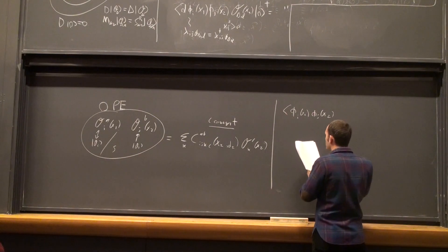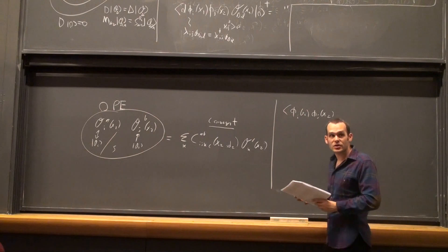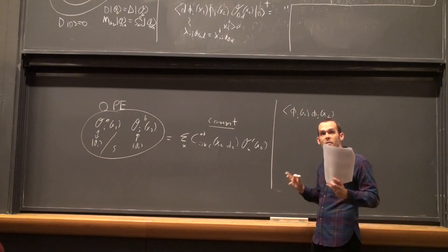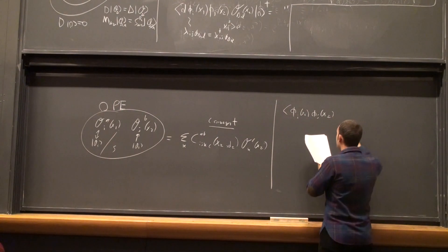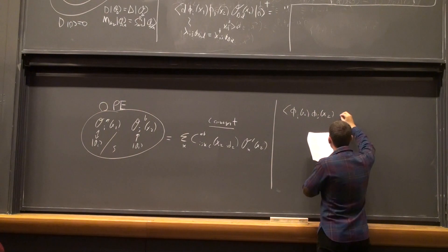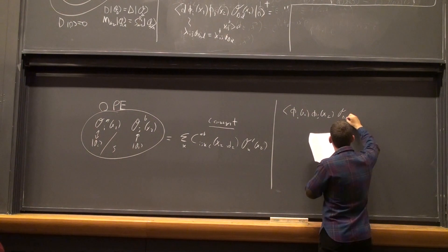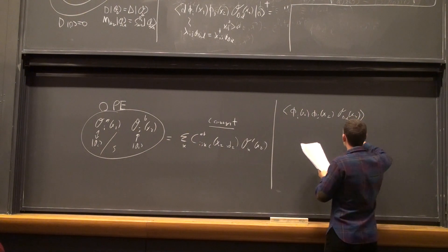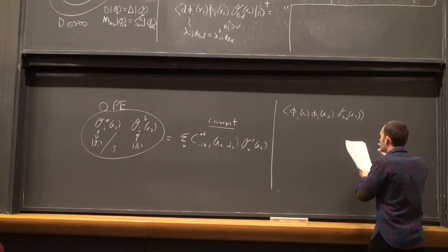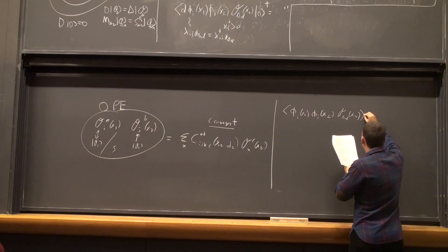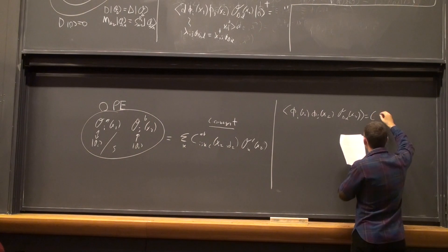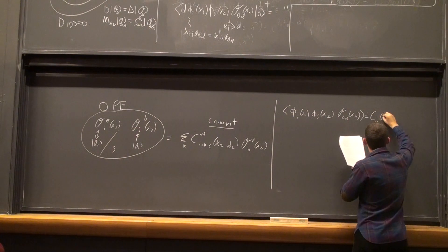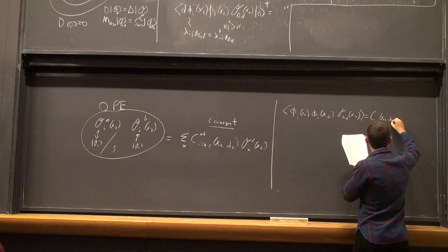So we're now going to use this statement. Basically, this statement allows us to turn two operators into one operator — a very powerful statement. So let's apply this first to a three-point function of two scalars and a spin-L operator. This means that we can turn two of these operators into one operator. So we have this OPE factor C, which is a function of x_{12} as well as derivatives. And then we're going to get a two-point function.